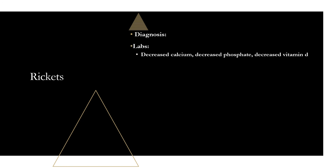For diagnosis, labs show decreased calcium, decreased phosphate, and decreased vitamin D. You'll see increased PTH as a compensatory mechanism — when calcium drops, the parathyroid releases PTH to try to raise it. You'll also see increased alkaline phosphatase due to increased osteoblastic activity and high bone turnover.